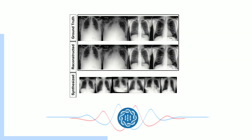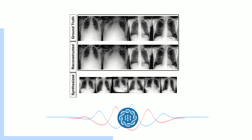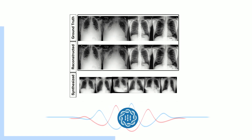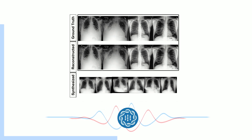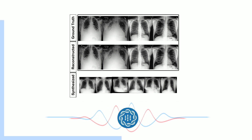Then we come to the most groundbreaking objective: text-grounded image generation. This is where MedUnifier flips the script and actually creates a medical image based purely on a written description. You could describe a medical condition, and this AI could create an image that accurately reflects that condition — with remarkable accuracy. The researchers claim the generated images are almost indistinguishable from real radiographs. That level of accuracy really speaks to the depth of understanding this AI has achieved.